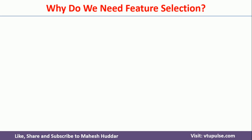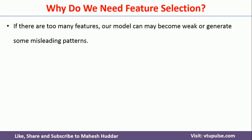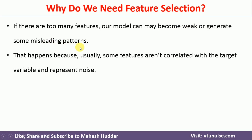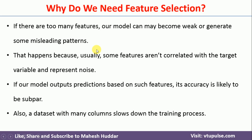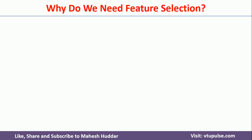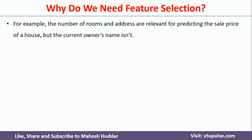The next question is: why do we need to do feature selection? As said earlier, the given dataset may contain a lot of redundant, noisy, and irrelevant features. We need to remove those, otherwise the trained model will become too weak and may generate some misleading patterns. To avoid that, we remove all those particular features from the feature set.